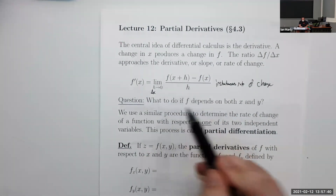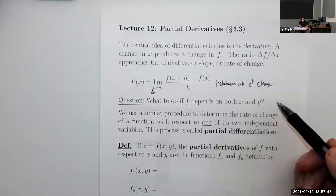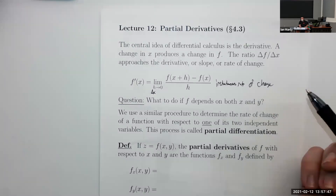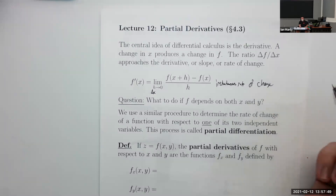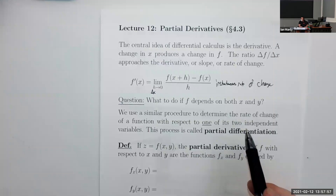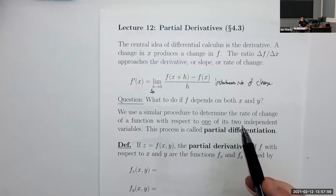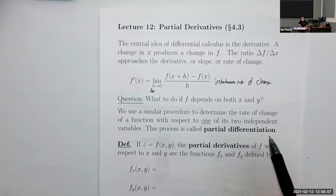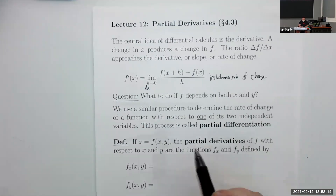Now here we only have a single variable. What happens if f depends on both x and y? It turns out that with two variables, there are two different ways our function can change — when we move x and when we move y. Because there's more than one way of changing our function, we have more than one derivative for each function. Each one of these is called a partial derivative, because each one only tells part of the story — only what happens when one variable changes.